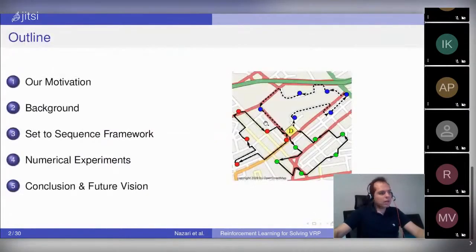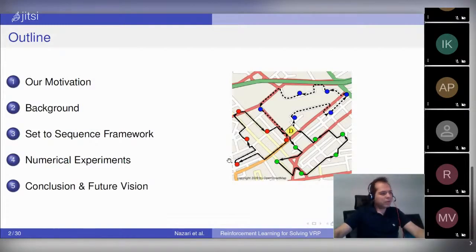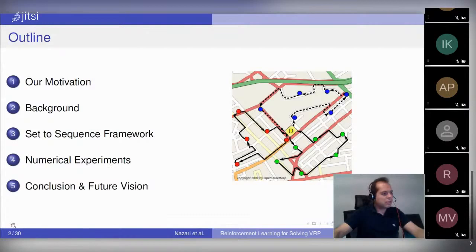Here is the outline of the problem I'm going to talk about. First, I will give a little bit of motivation about why we are interested in this problem. I will give a brief background on what the current state-of-the-art solutions and also machine learning solutions are for solving the VRP. Then I will introduce our framework, which I call the set-to-sequence framework, and then I will present some numerical examples and conclusions.